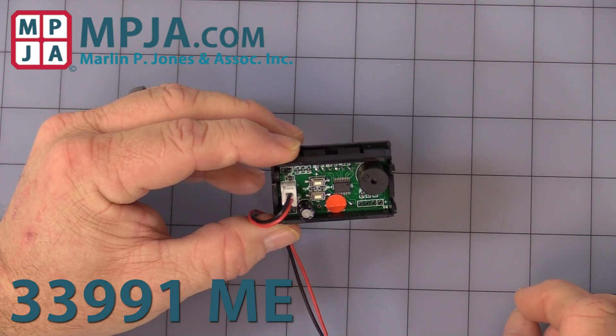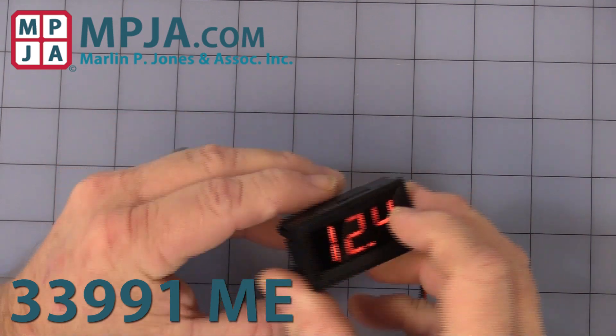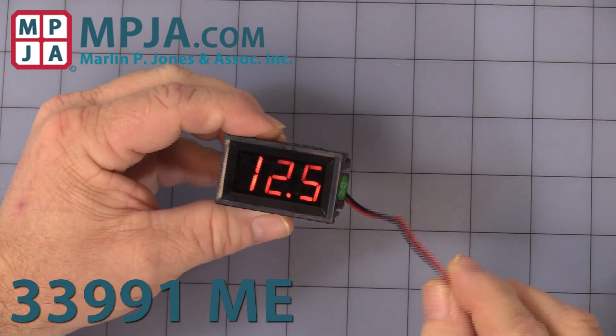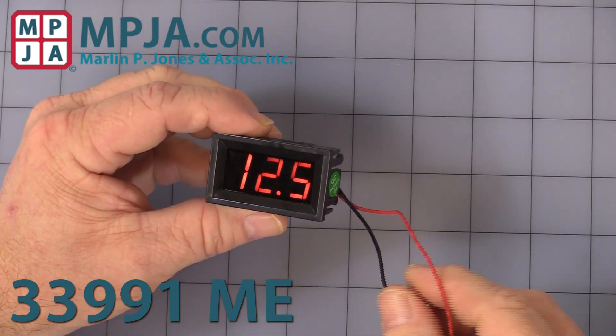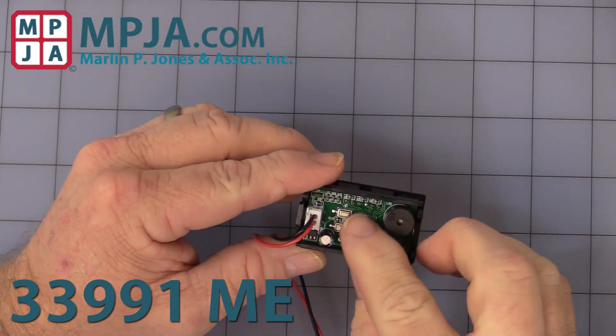It works from 4.5 to 50 volts DC coming through the power cord. Red's positive, black's negative. It comes in through the power connector.